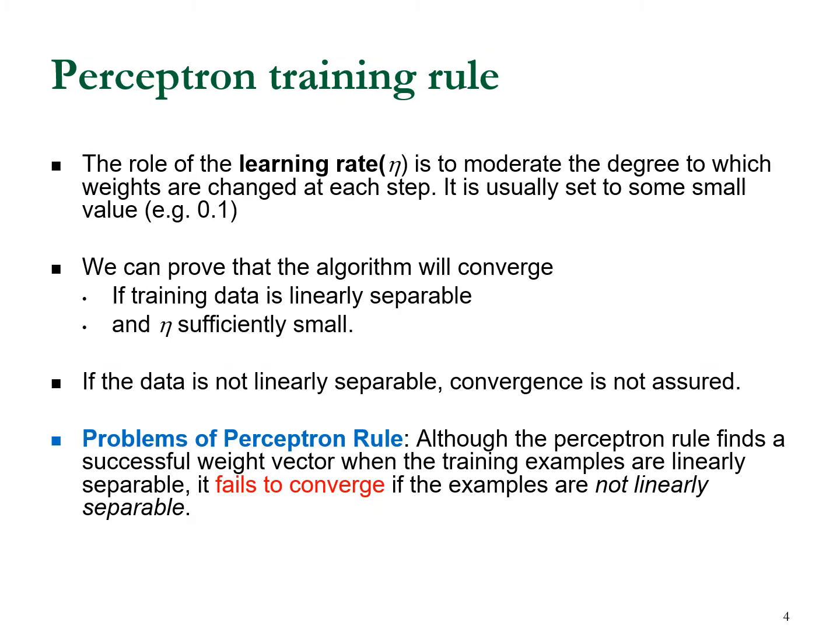The learning rate eta determines how much we update the value of W. If the learning rate is very high, we modify W in a big way. If the learning rate is very small, W changes just a little. Learning rate determines how much you update the W value, and it is usually set to a very small number like 0.1.